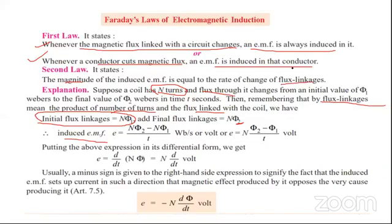The rate of change of flux linkage: final flux linkage is Nφ₂, initial flux linkage is Nφ₁, so change in flux linkage is Nφ₂ minus Nφ₁. The rate is this divided by t. We can write induced emf equals N(φ₂ - φ₁)/t, which equals N(dφ/dt).